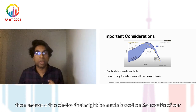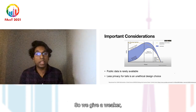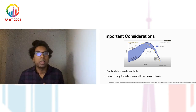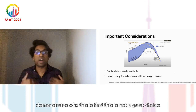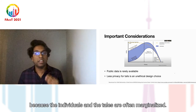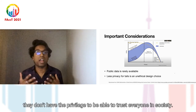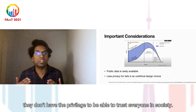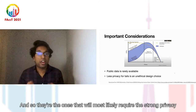An easy choice based on our results might be to give weaker privacy — a weaker epsilon guarantee — to the tails of the dataset. However, as demonstrated in a graphic from Dr. Cynthia Dwork, this is not a great choice, because individuals in the tails are often marginalized and don't have the privilege of having nothing to hide. They are precisely the ones who will most likely require strong privacy guarantees.